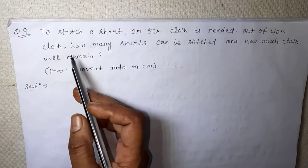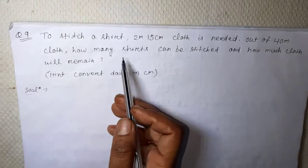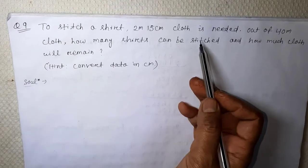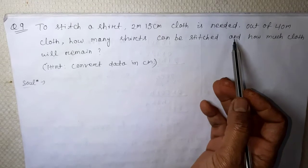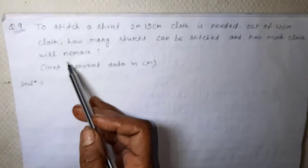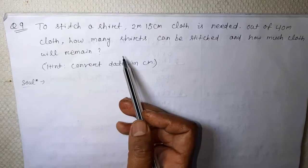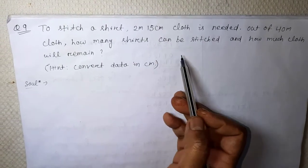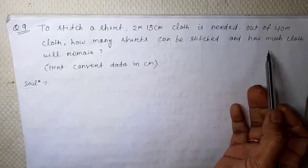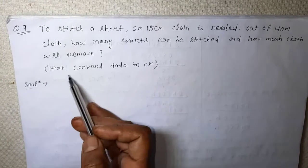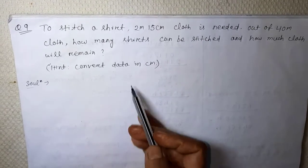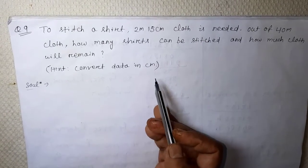To stitch a shirt, 2 meter 15 centimeter cloth is needed. Out of 40 meter cloth, how many shirts can be stitched and how much cloth will remain? Convert into centimeter.